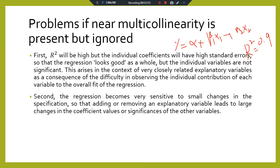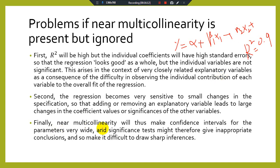Second, the regression becomes very sensitive to small changes in the specification, so that adding or removing an explanatory variable leads to large changes in coefficient values or significance. Finally, near multicollinearity will make confidence intervals for the parameters very wide, and significance tests might therefore give inappropriate conclusions, preventing us from making correct inferences or reasonable policy implications.